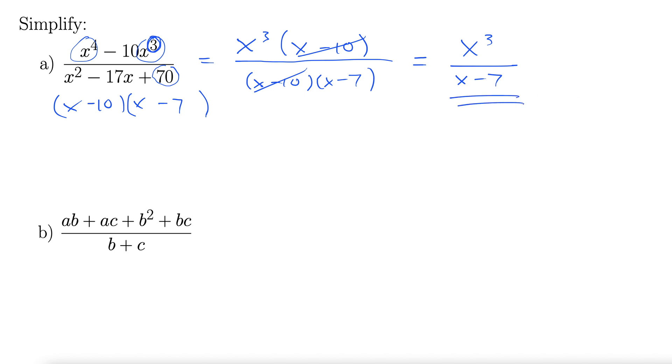Now, let's look at the next one. We have ab plus ac plus b squared plus bc all over b plus c. Anytime you see four terms like this, one specific method should jump right out. That method is grouping.